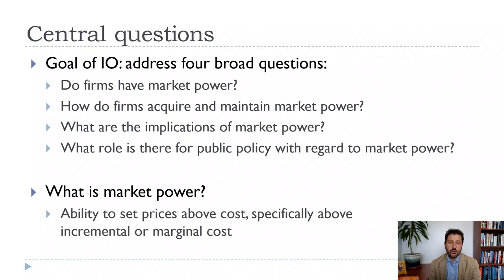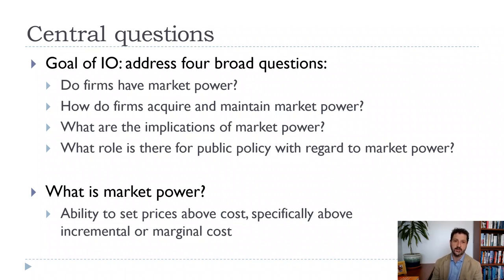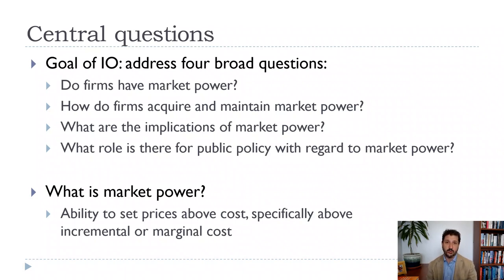Let's think about four broad questions we want to answer in industrial organization. The first one is: do firms have market power? If the answer is no, then we can stop right here and just think about perfect competition. Obviously the answer is going to be yes. Then the question is, why do firms have market power? How do they acquire it? How do they maintain it? Is it something we want to worry about? Should we have competition policy that limits market power — and should that policy think about the difference between static market power versus dynamic market power? If market power is temporary because firms have come up with a really good product or service, that's different than if firms are maintaining their market power over time and using it to limit competition.